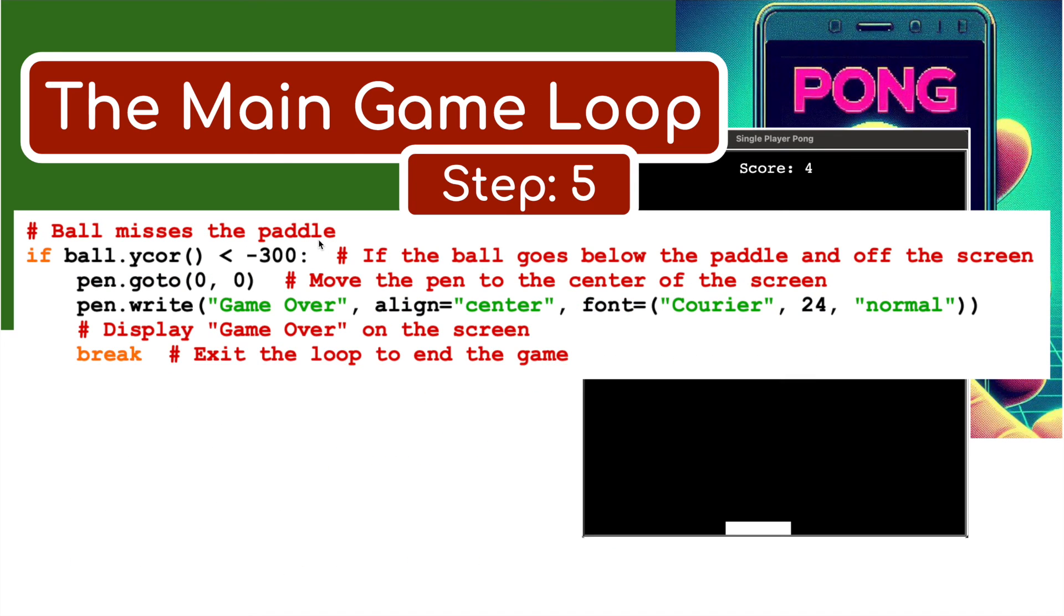Step five - if the ball misses the paddle down here, if it goes down this side and passes the paddle. If the ball drops to less than minus 300 - basically the edge of the border - if the ball goes below the paddle or off the screen, then pen go to zero, zero - pen in the middle - and it's going to write the word game over right in the middle of the screen.